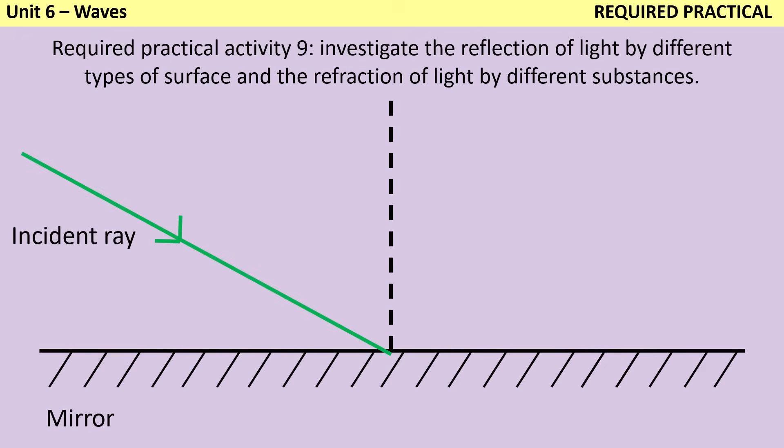Then we can draw in the incident ray, and the angle of incidence is measured between that incident ray and the normal. The way I always think about this is there wouldn't have been any point in me drawing the normal if I wasn't going to use it.